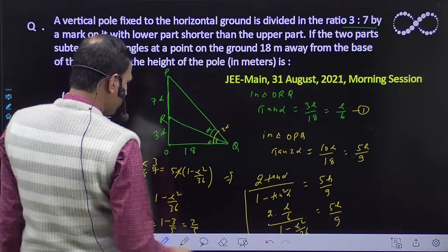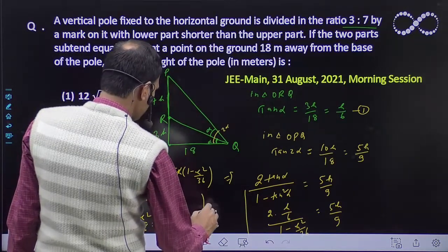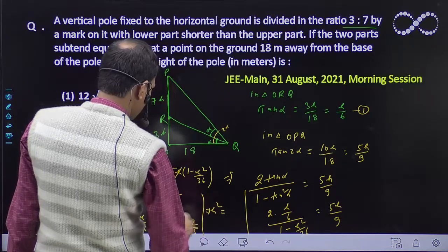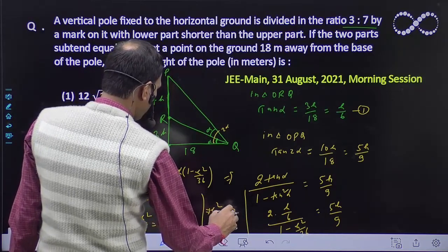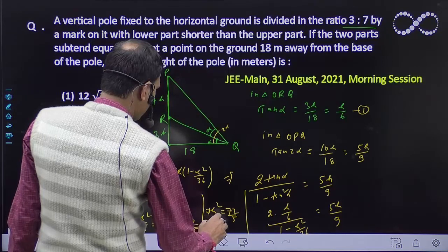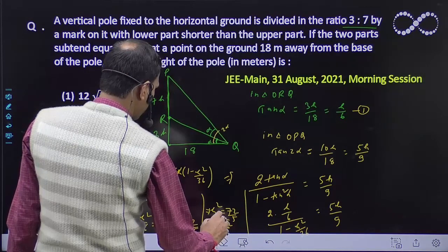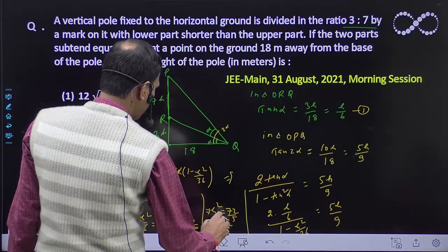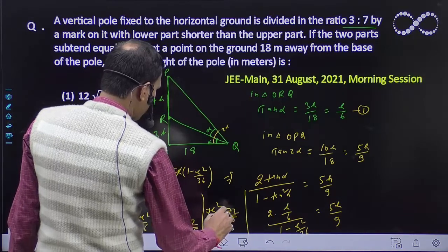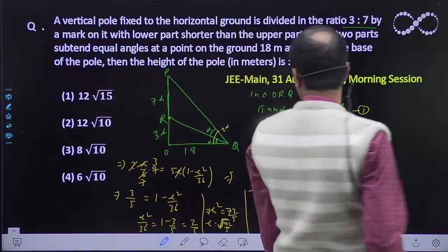So h square by 36 equals 1 minus 3 by 5. 1 minus 3 by 5 means 2 by 5. So h square equals 72 by 5. So h equals square root of 72 by 5.